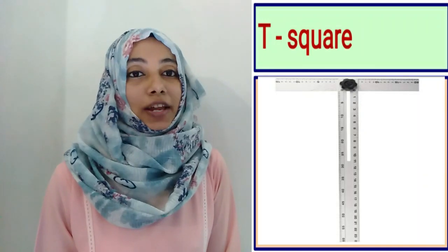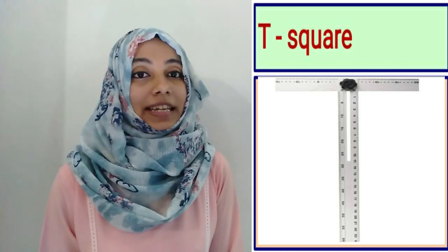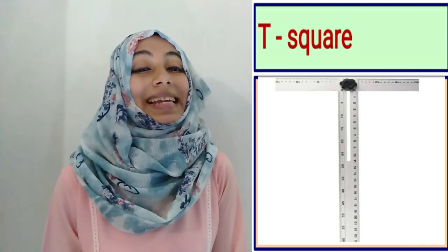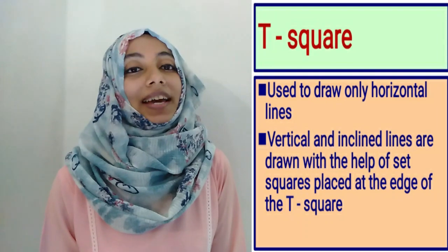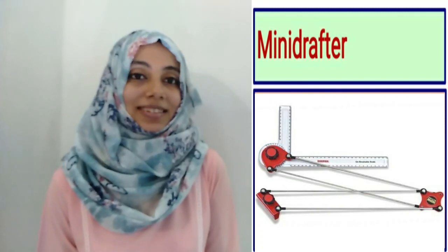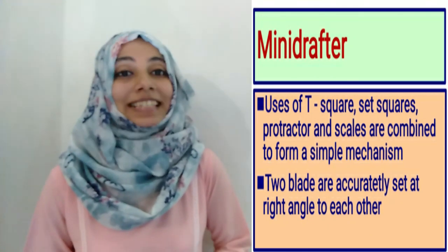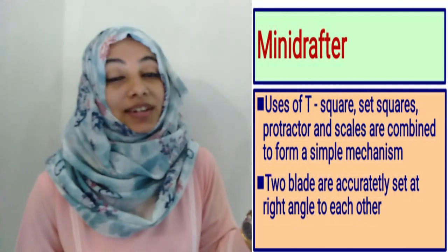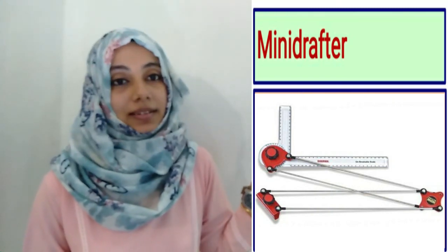Next is T-square. T-squares are used to draw horizontal lines. We said set squares are used to draw vertical lines but cannot be used to draw horizontal lines, so T-squares are used for drawing horizontal lines. By combining set squares with a T-square, we can also draw vertical and inclined lines. Mini drafter. The uses of T-square, set square, protractor, and scales are combined with a simple mechanism known as a mini drafter. In a mini drafter, there are two blades or scales accurately placed at right angles. We can study the mini drafter in detail in another video.